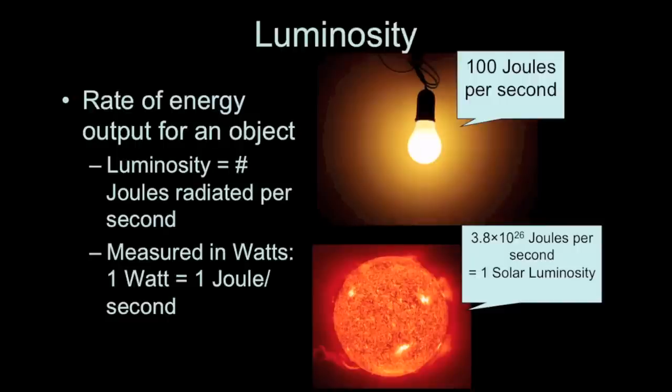What about something like the sun? The sun is much larger and much hotter than an incandescent light bulb. The number of joules it gives off per second is 3.8 times 10 to the 26 joules per second. That's 100 trillion trillion joules per second. That is one solar luminosity. Often when we compare the luminosities of stars, we're comparing them to the luminosity of the sun.